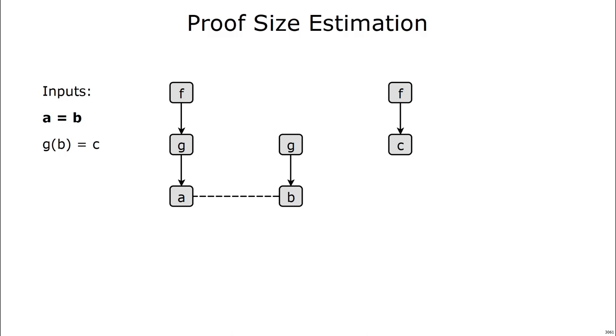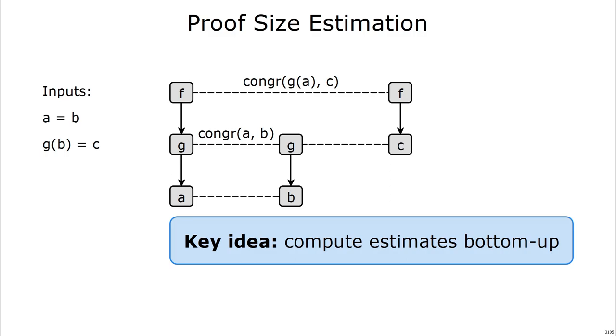So here's a final example that shows how we're going to do this. Let's add an equality A equals B into this e-graph, which will imply a congruence between G of A and G of B. We'll also add an equality G of B equals C, which will apply another congruence between these top nodes. And the key idea is that we're going to compute estimates for these congruence nodes in a bottom-up fashion, so we can use them to find a shorter proof. Each non-congruence edge gets a weight of 1, which will enable us to find the size of this congruence edge right here. And we'll do that by simply summing up the edges along the path needed to prove A equals B, which is 1, a single equality edge.